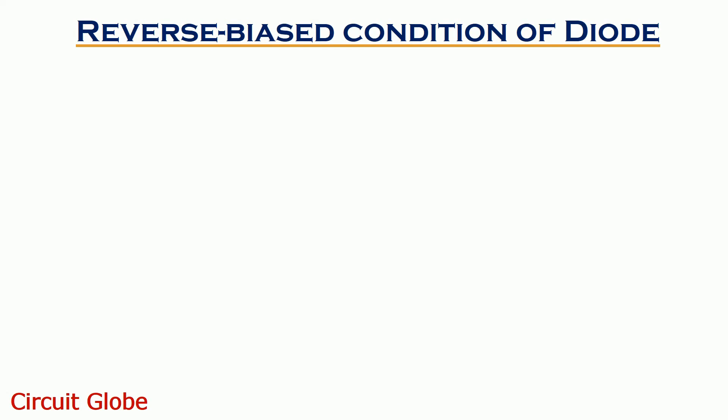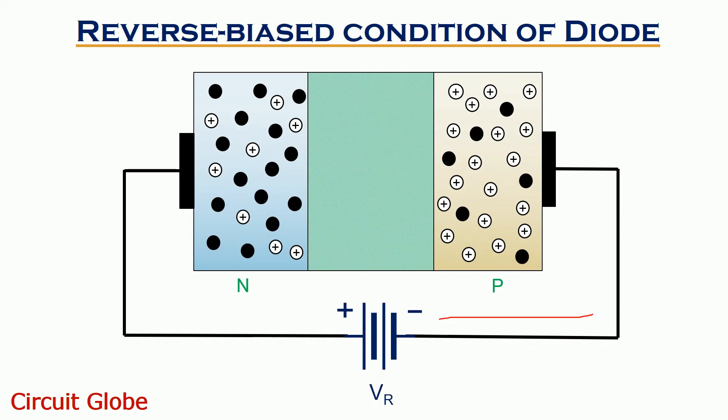Moving further, let us now consider reverse biased condition of our diode where we connect negative potential of the battery to the P side and positive potential of the battery to the N side.